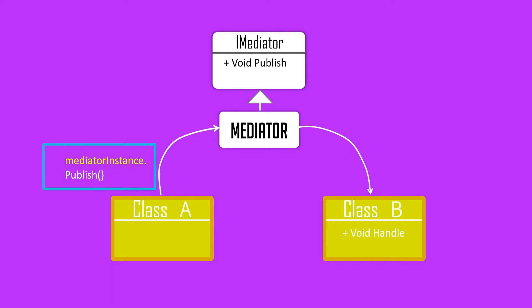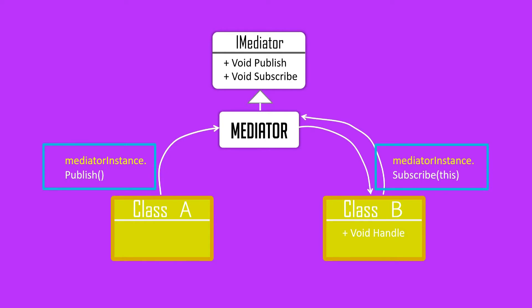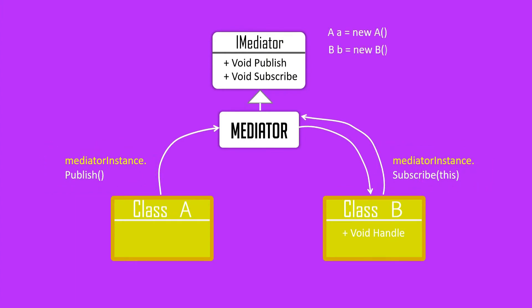To call the 'handle' method of Class B, the mediator must have the instance of B. That's where each subscriber — the classes who want to receive messages — must ensure their references are available in the mediator. That's why we need one more method in the mediator called 'subscribe'. This is used by all interested classes to add themselves to the mediator — it's a kind of bi-directional reference: the mediator has instances of all subscribers and each subscriber has the instance of the mediator.